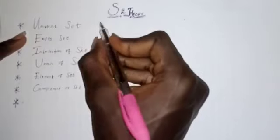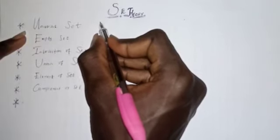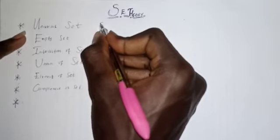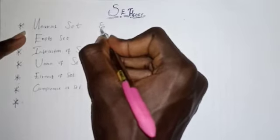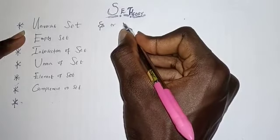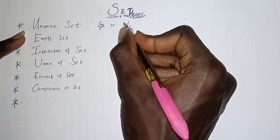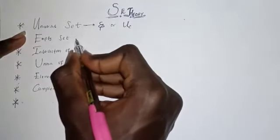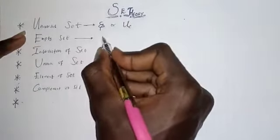The universal set is symbolized as a curly U. If I write something like this, then I will just try to put a curly sign in it, or you can decide to write like this. That's the symbol for universal set, and the symbol for an empty set is phi.